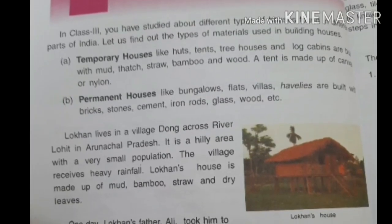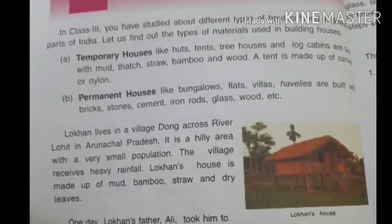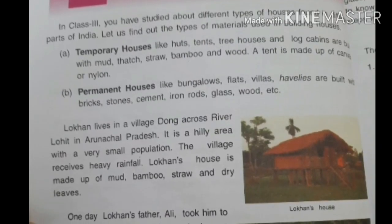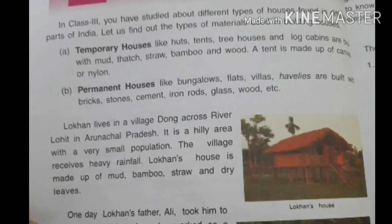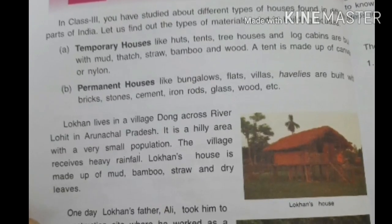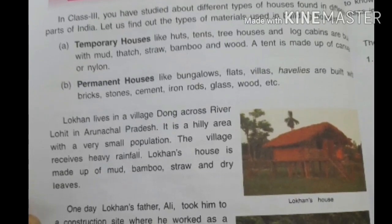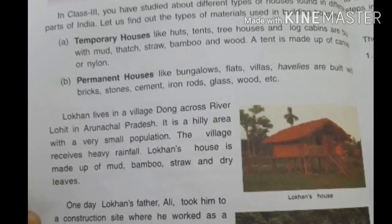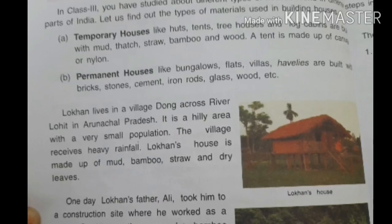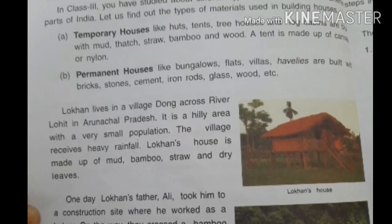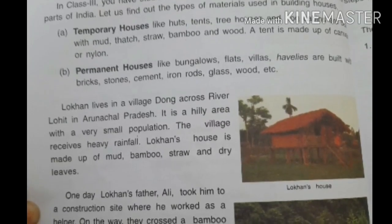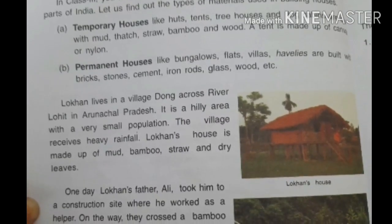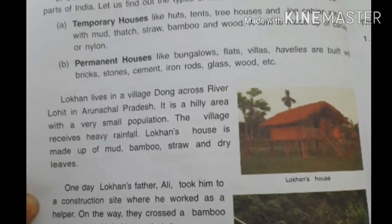A tent is made up of canvas or nylon. Whereas permanent houses like bungalows, flats, and villas are built up of bricks, stone, cement, iron rods, glass, wood, etc. Those houses are known as permanent houses.